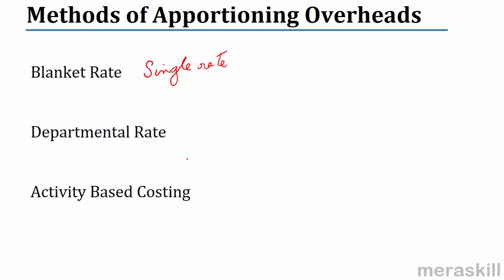With a departmental rate, it's possible that department 1 will have a different rate, department 2 a different rate, department 3 a different rate. Not only that, department 1 may have it on the basis of labor hours, department 2 on the basis of machine hours, and so on. So there could be a blanket rate, a departmental rate, or overheads may also be absorbed on the basis of activity-based costing.